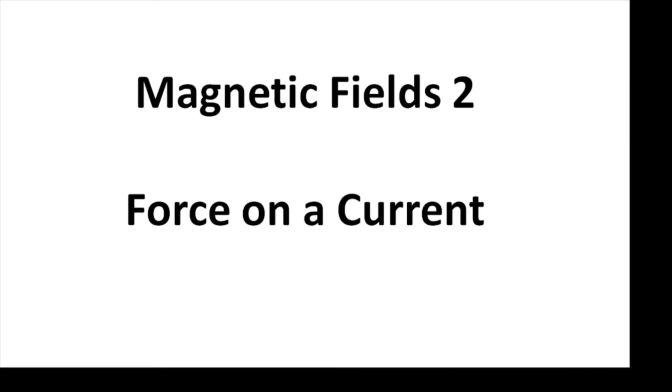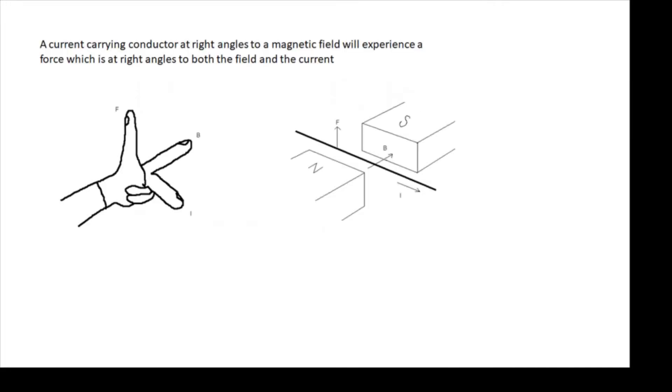Magnetic Fields 2, Force on a Current. From GCSE you should remember that if you have a current carrying conductor, in other words a wire with a current in it, at right angles to a magnetic field, then you will get a force which is at right angles to the field and the current.